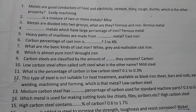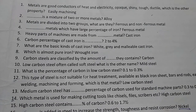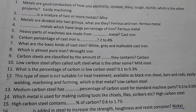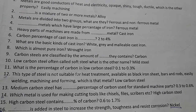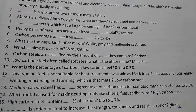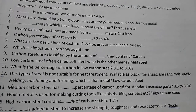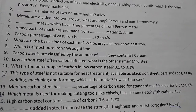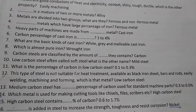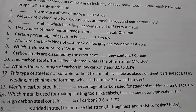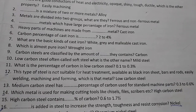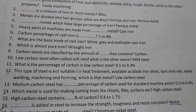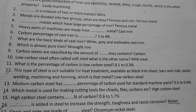Low carbon steel is not suitable for heat treatment. It is available as black iron sheet, bars, and rods, and is easily welded, machined, and formed.